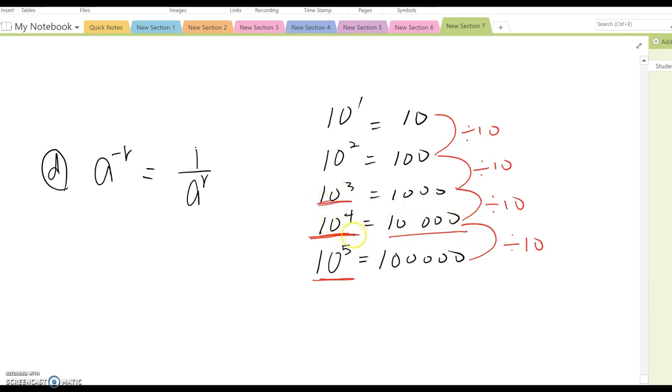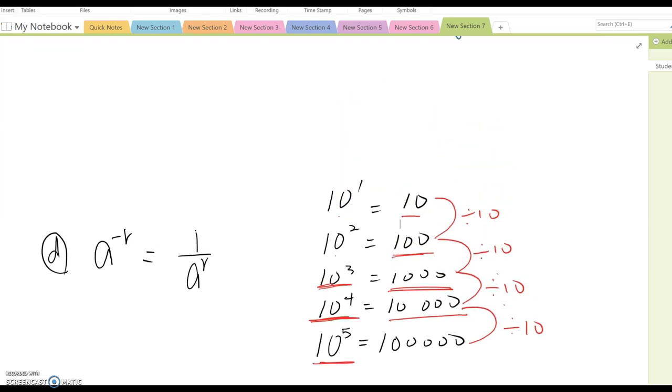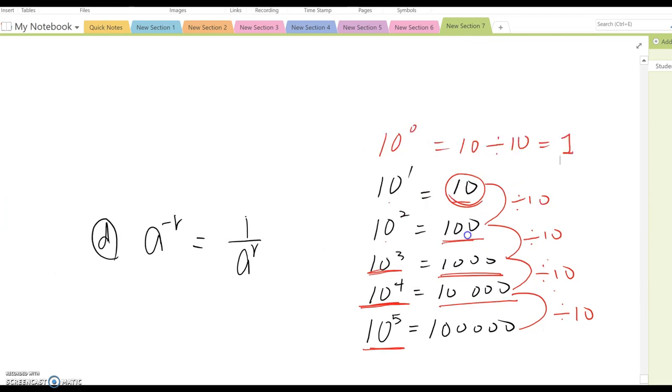10 cubed means 10 to the 4th divided by 10, so become 1,000. 10 squared, 1,000 divided by 10, so 100. 10 to the 1st power divided by 10, so become 10 here. Which means 10 to the 0th power means 10 divided by 10, so equal to 1. So, go a little further.